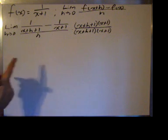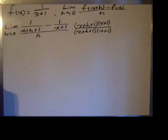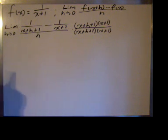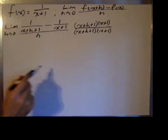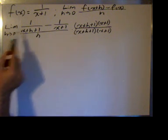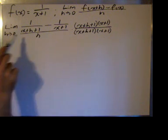By multiplying — even though it doesn't look like 1, it is 1, the value is 1 — by multiplying this expression by 1, we do not change its value, though we do change its appearance. As we distribute this product through this numerator here,